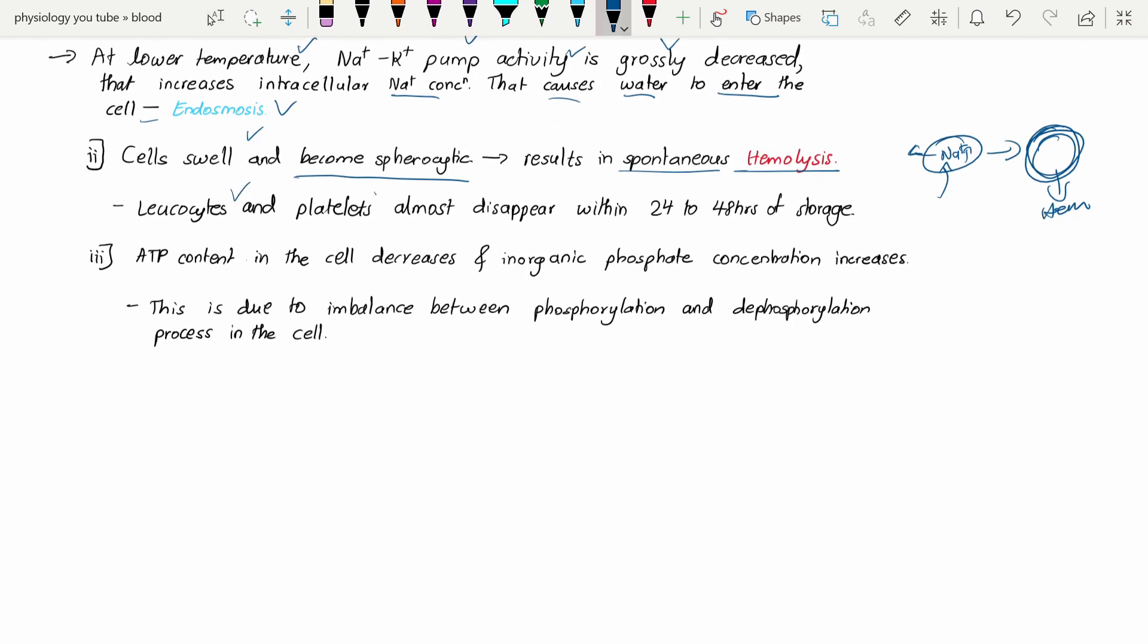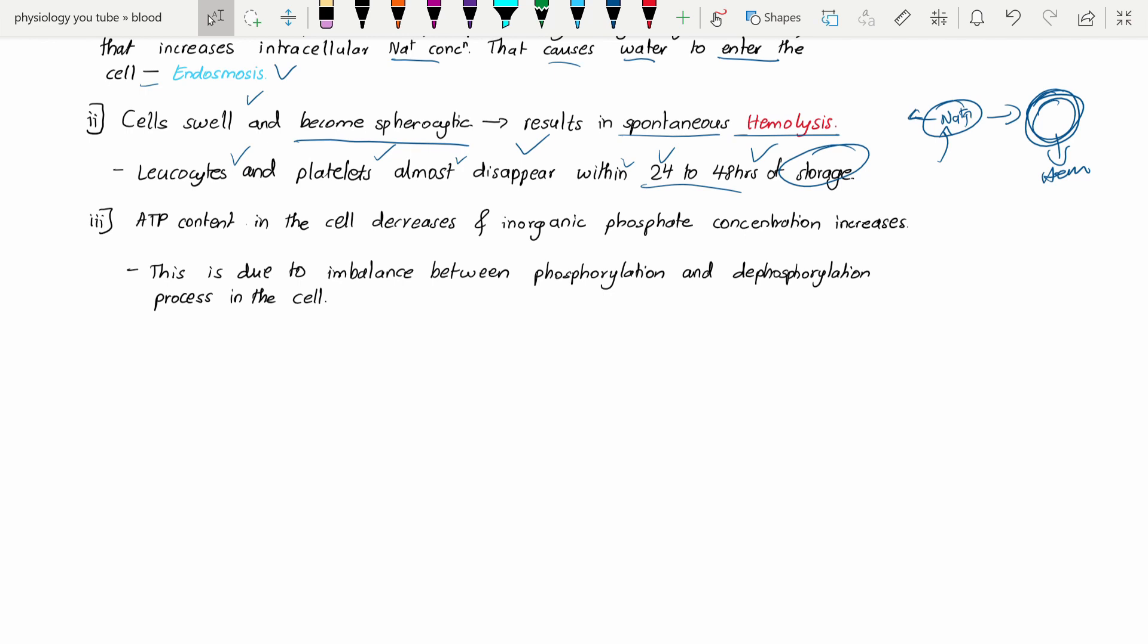Leukocytes and platelets almost disappear within 24 to 48 hours of storage. By the time the stored blood reaches two days, the WBCs and platelets will be disappeared. The ATP content in the cell decreases.